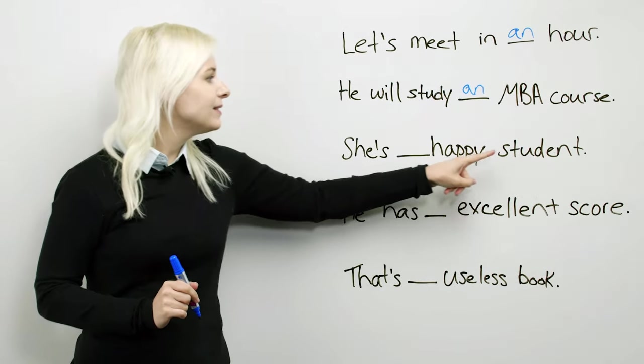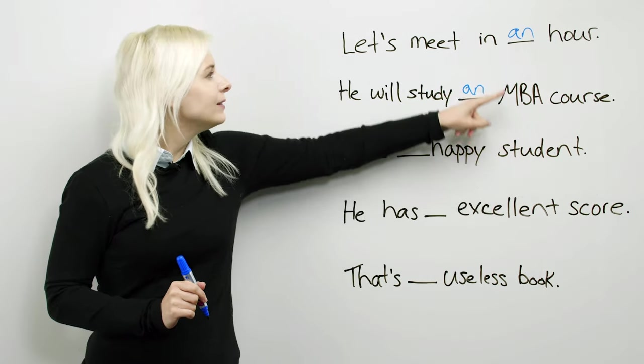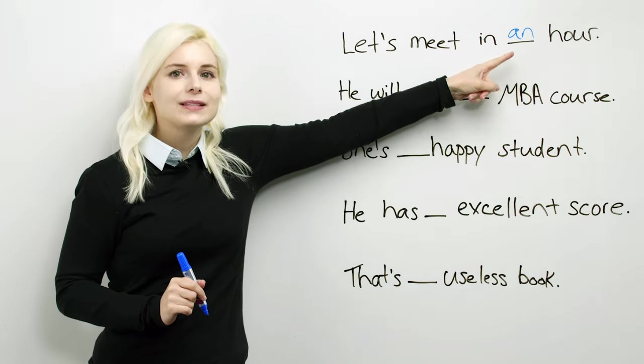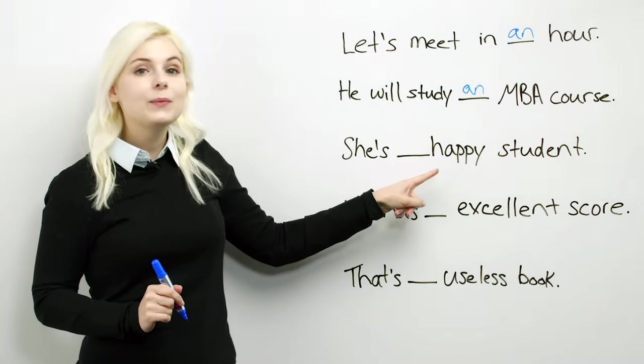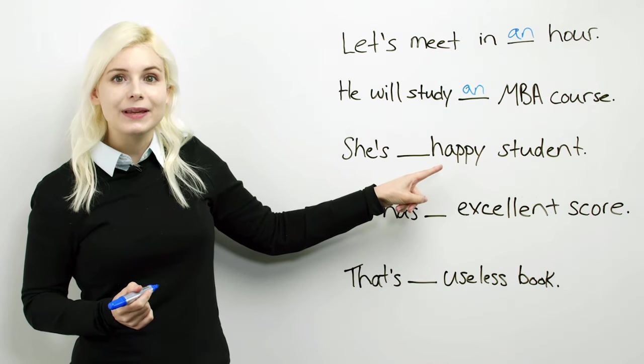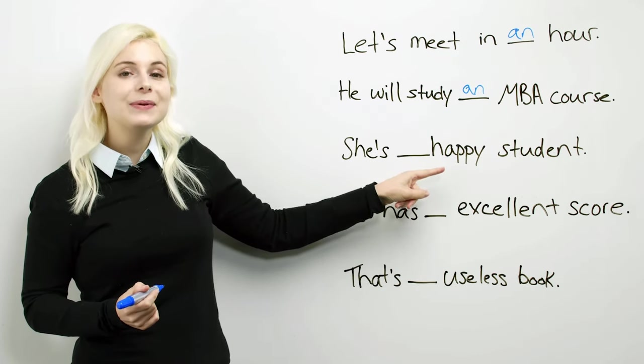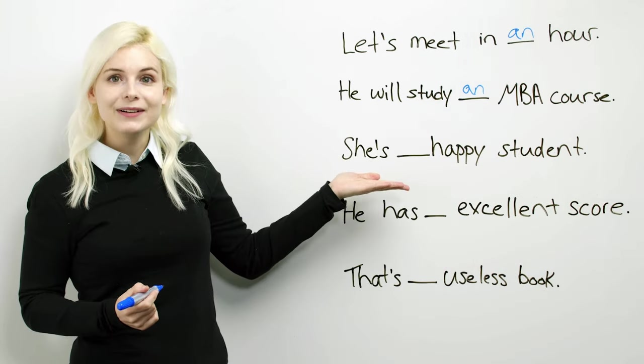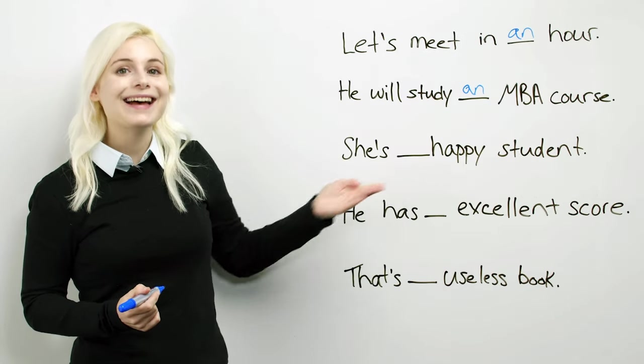She's blank happy student. Look up here. Here the H was silent, but here we pronounce the consonant H sound. Happy. H. Happy student. So she's a happy student.